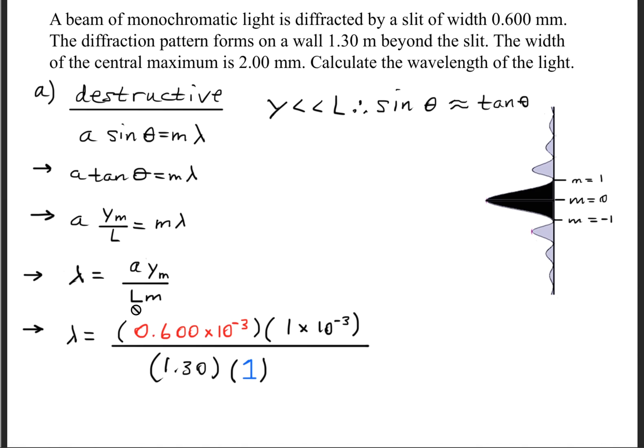Now, the distance of the screen is 1.30 meters, and our integer m is equal to 1. This will give us a wavelength of 462 nanometers.